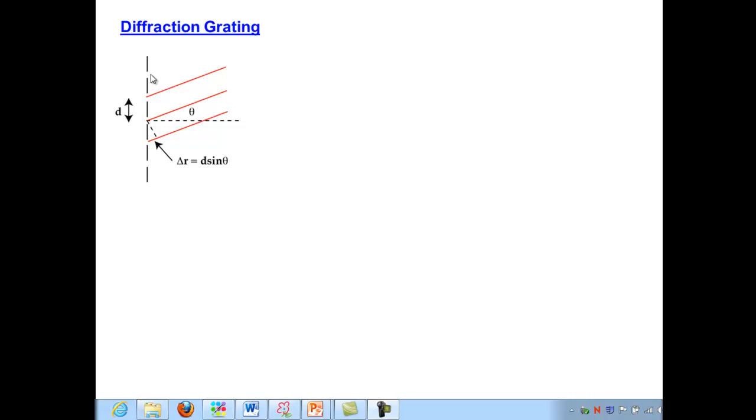We've talked about the two-slit experiment. That was how we began our study of the wave properties of light. And now let's imagine adding more and more slits while keeping them the same distance apart. And so we're going to have lots and lots of them.